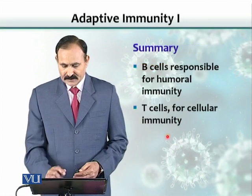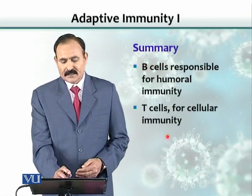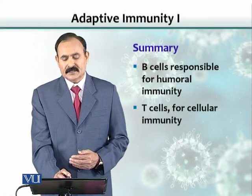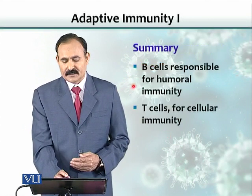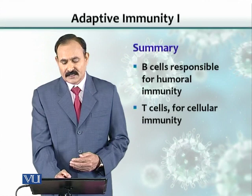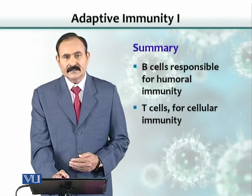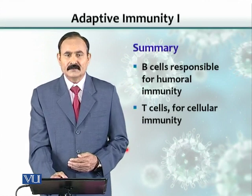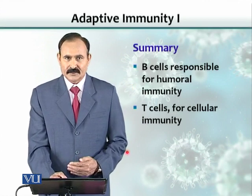In summary, B cells are responsible for humoral immunity and T cells are responsible for cellular immunity.